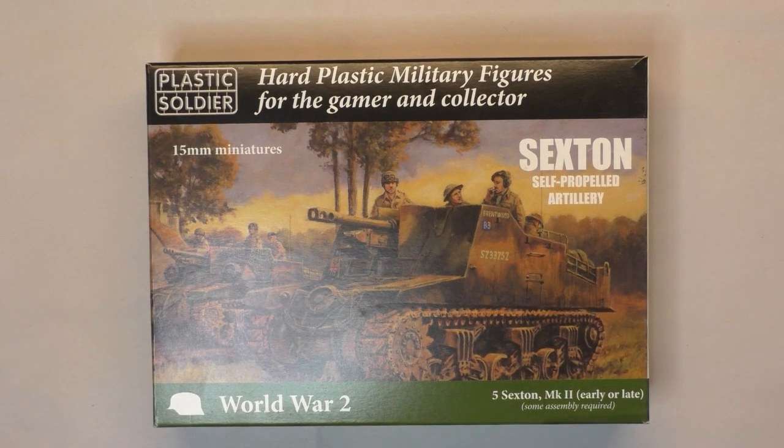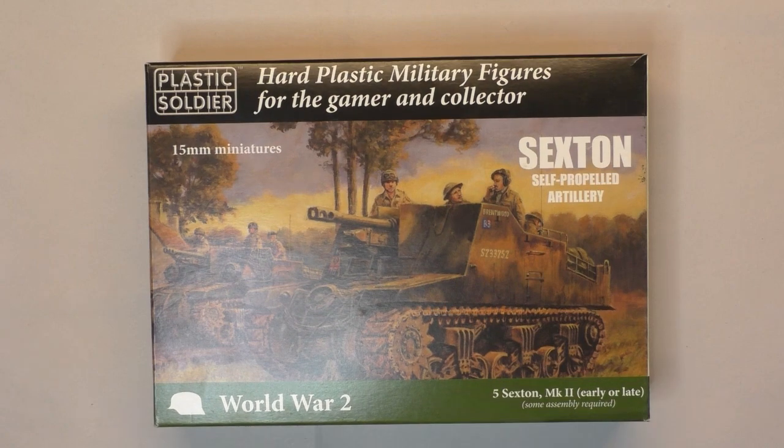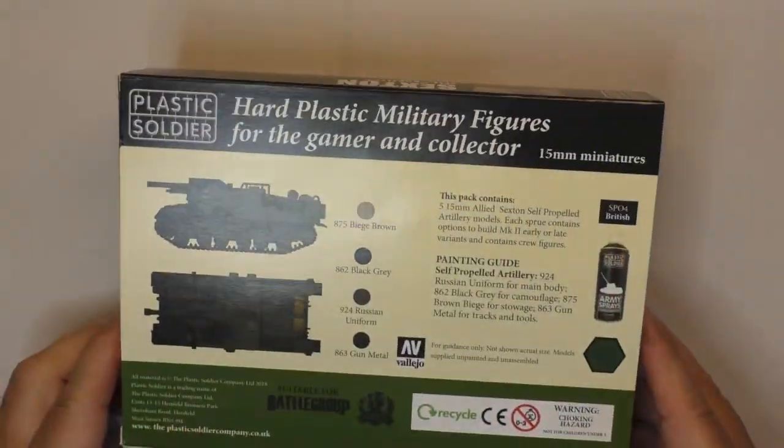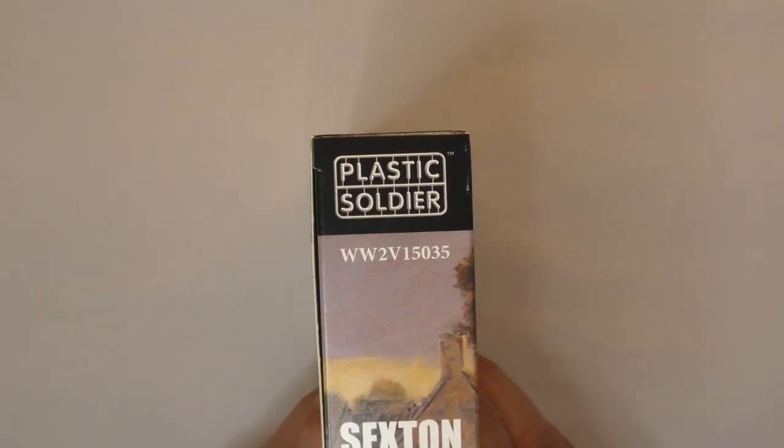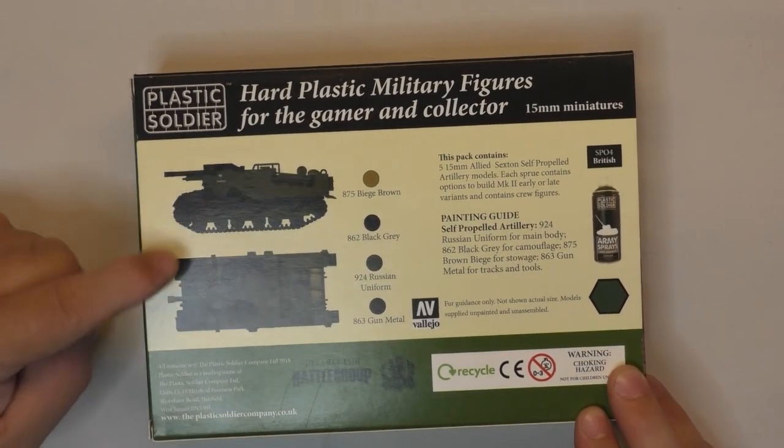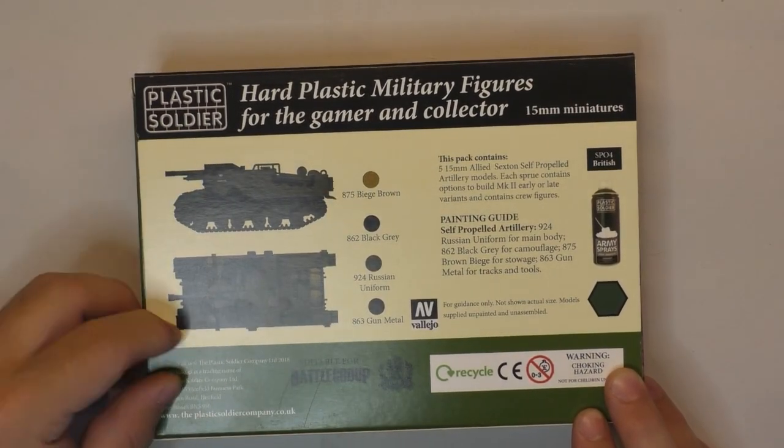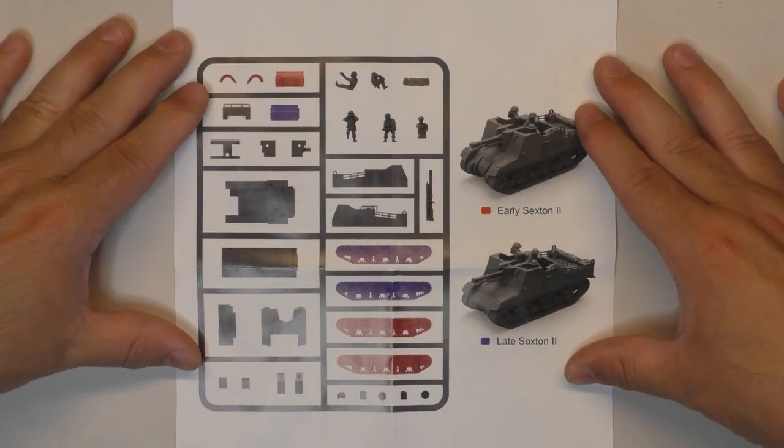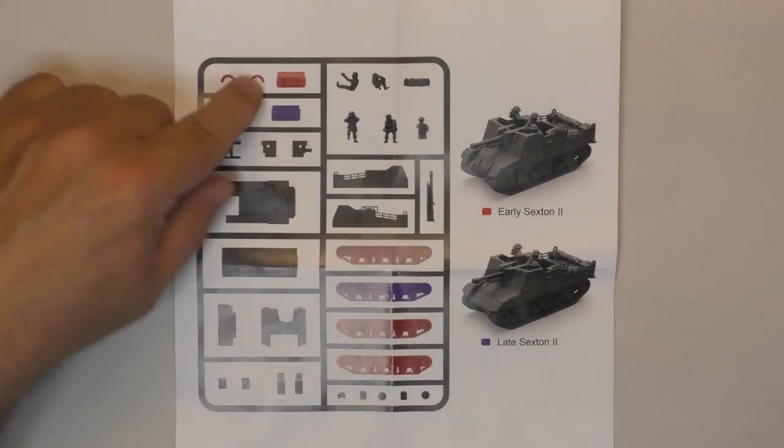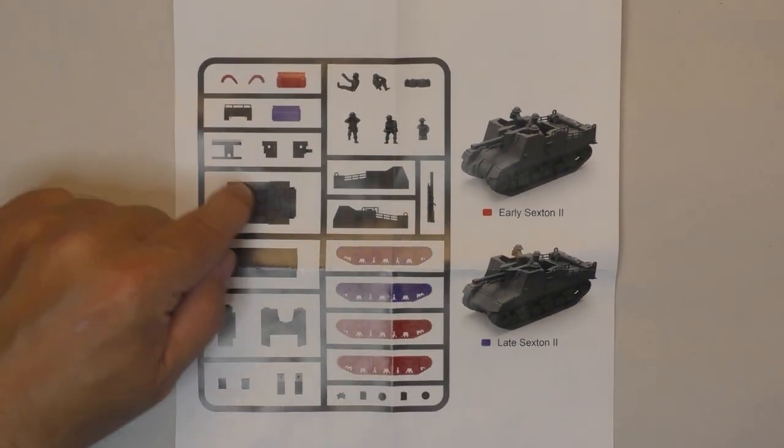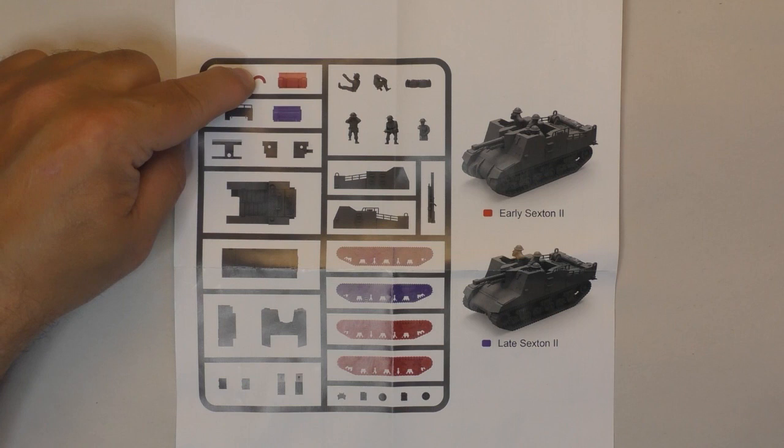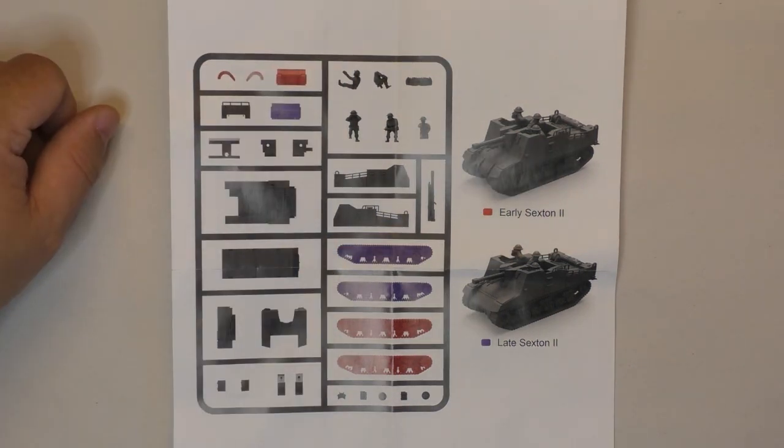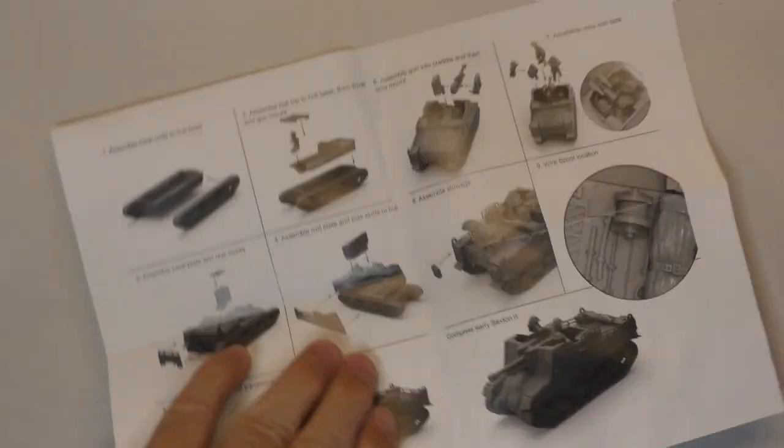This is the Plastic Soldier Sexton, it's 15 millimeter or 1:100 scale. There's five Sextons inside and the number of the box is WW2V15035. In the back they show you suggestions for painting and here's the plan. You have the early Sexton and late Sexton colored, so what is black is for everybody and what is red is for the early version and the purple will be for the late version.